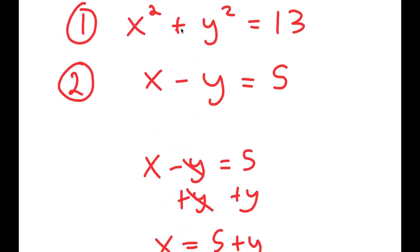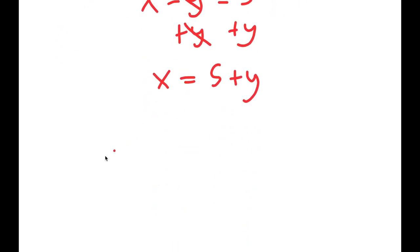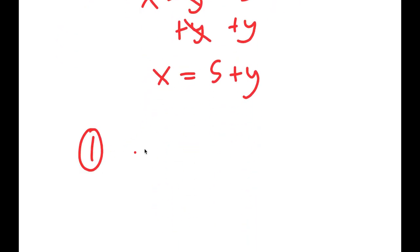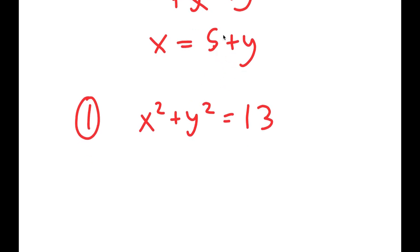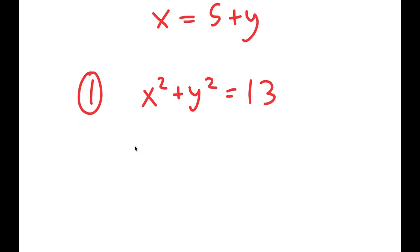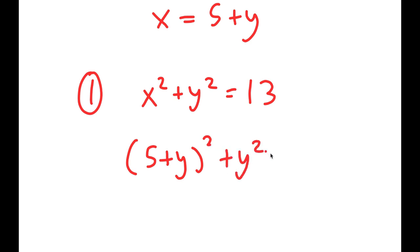Now that I have my value of x, I can plug this into my first equation. My first equation is x squared plus y squared is equal to 13, and plugging in x I get 5 plus y, quantity squared, plus y squared is equal to 13.